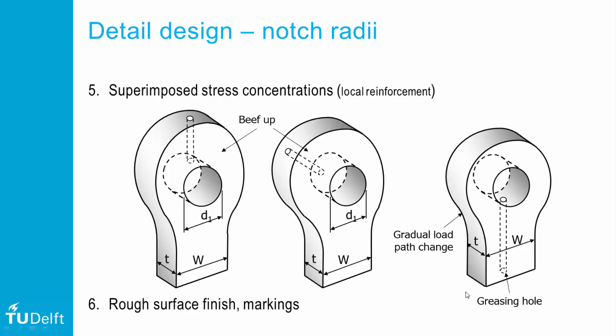Fifth, avoid superposition of stress concentrations. As seen in a previous video, stress concentration factors rapidly increase when notches are superimposed. For the example of the lug, the drainage holes should be located as far away as possible from the stress concentration. Three solutions are given, each with advantages and disadvantages, and they should all be preferred over placing the drainage hole left or right. Depending on the location, one may consider beefing up the lug geometry to reduce stresses further.